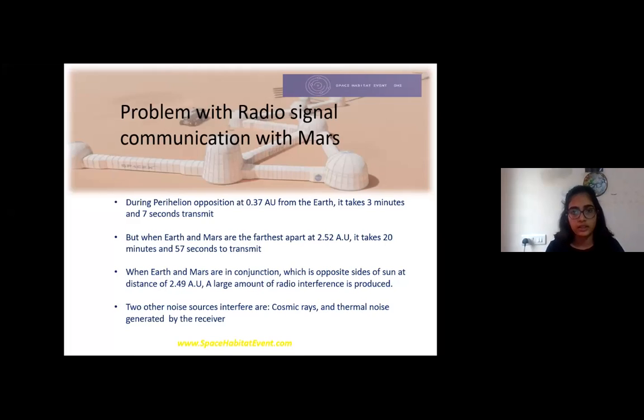The problem with radio signal communication: during the perihelion of Mars, the distance from Earth to Mars is around 0.37 AU, and during this time it takes around 3 minutes to transmit data. When it's farthest apart it takes around 20 minutes, and round trip time would be around 40 to 42 minutes.